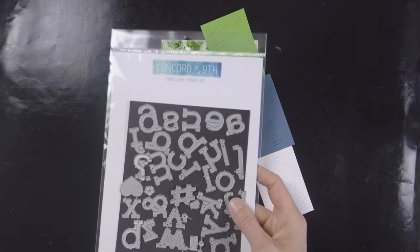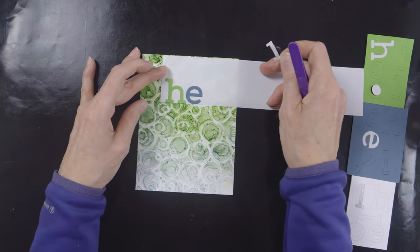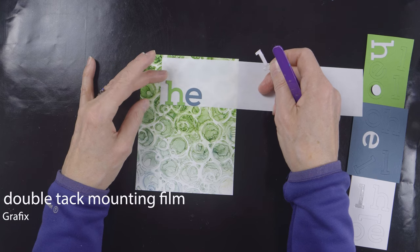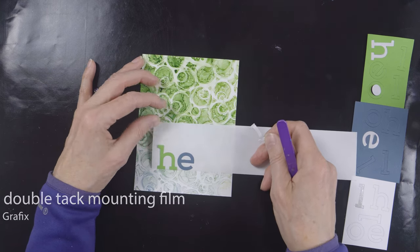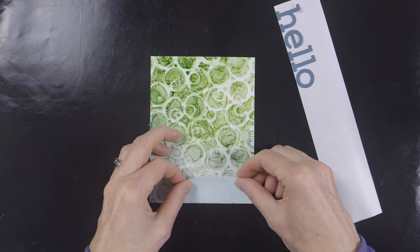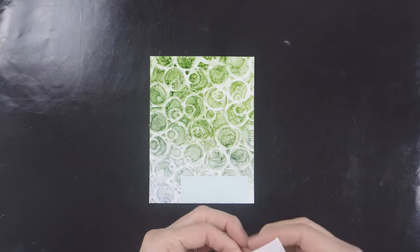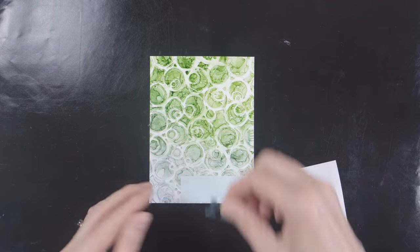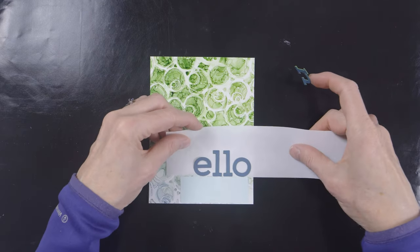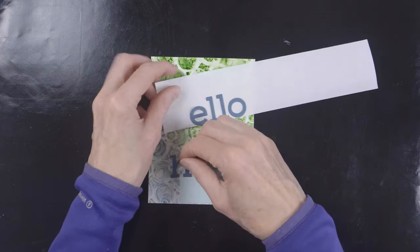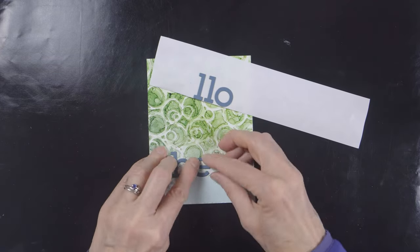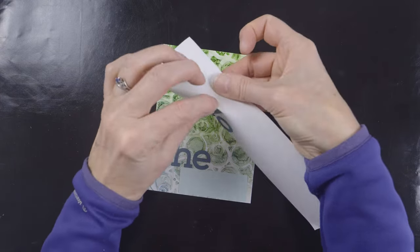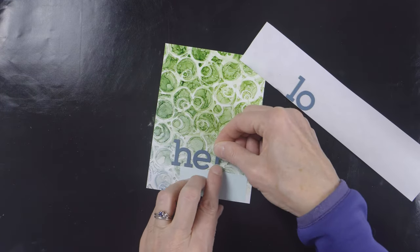I decided to cut some letters for the word 'hello' out of some cardstock. I tried a few colors there, and I've got double tack mounting film from Graphics on the back. I cut it out of a few colors so I could work out what would look best, and I ended up stacking the blue letters on top of the green so that was slightly raised. This is the Concord & 9th Simple Serif Alphabet dies, and I love them.